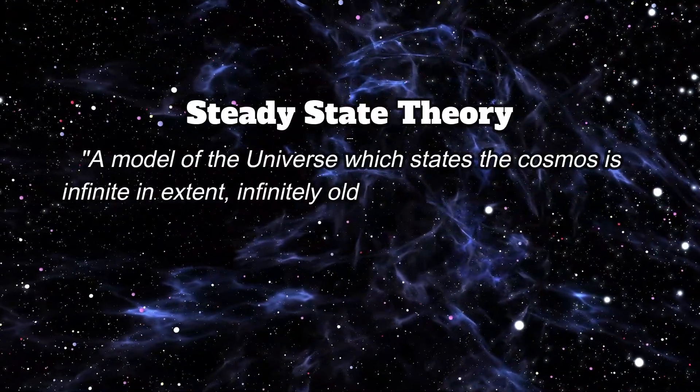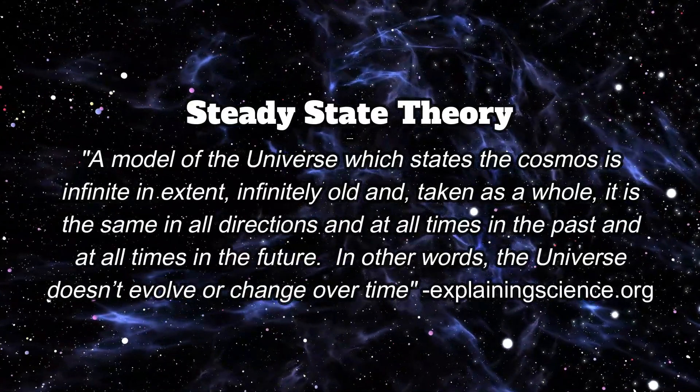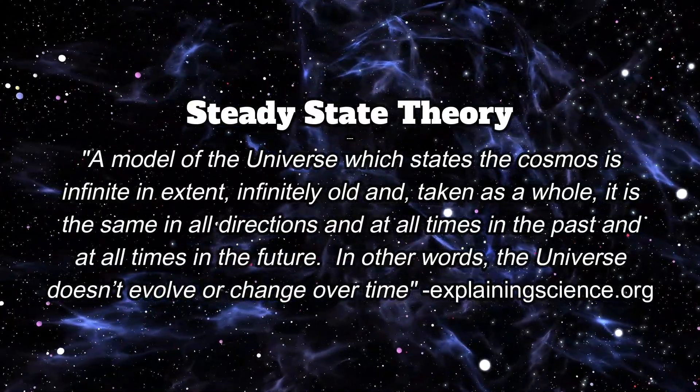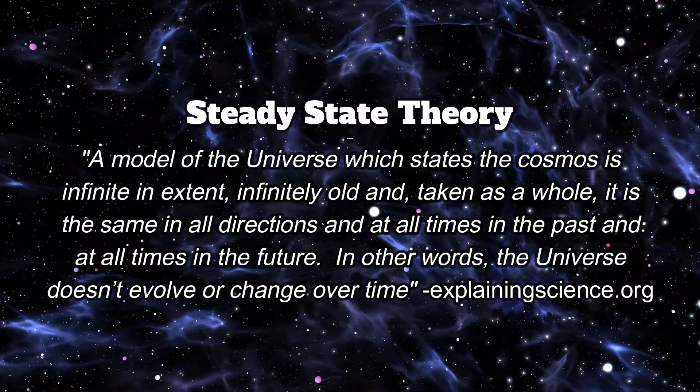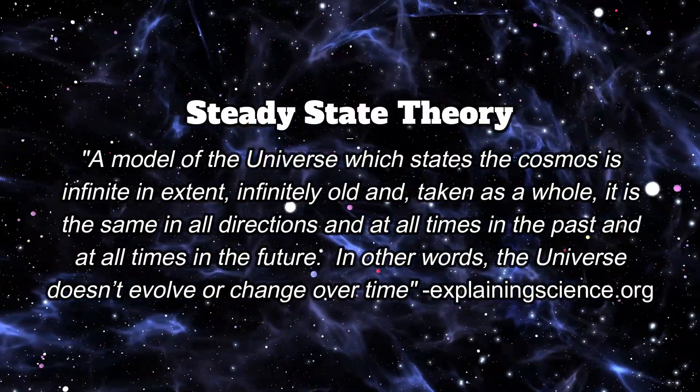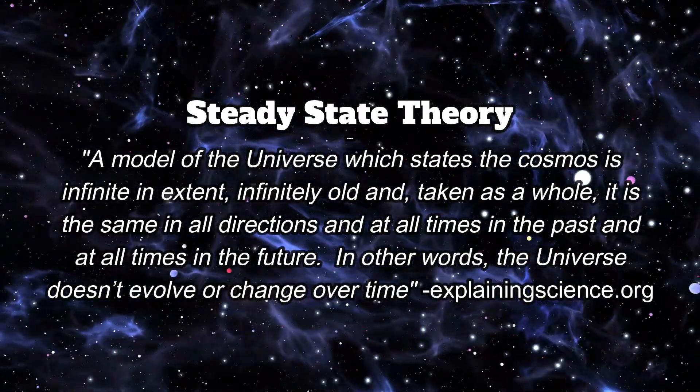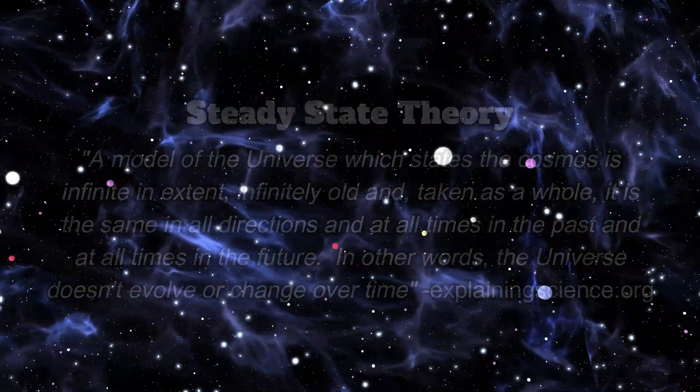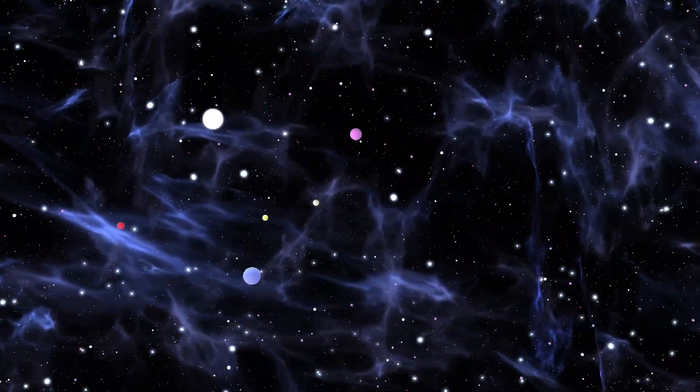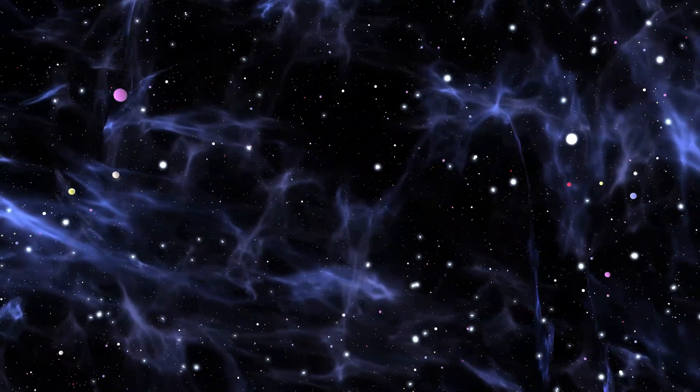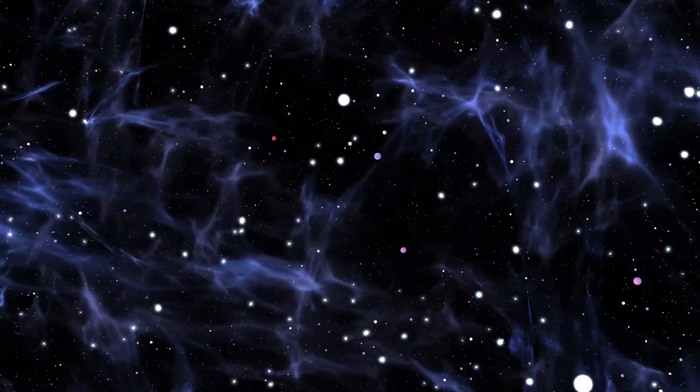The universe was thought to be infinite and homogeneous, meaning matter and energy was evenly distributed throughout space. As for Seeliger's problem with Newton's law of gravitation, this arises from the following scenario, taking into account that the universe was thought to be infinite in size and uniform in matter distribution.